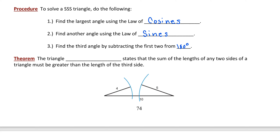Also, keep an eye on your triangle to make sure it makes sense. The triangle inequality states that the sum of the lengths of any two sides must be greater than the length of the third side. For example, if one side has length 10 and the other two sides are 4 and 5, their sum is less than 10, making the triangle impossible. Also remember that the side opposite the largest angle is the largest side, and the side opposite the smallest angle is the smallest side.